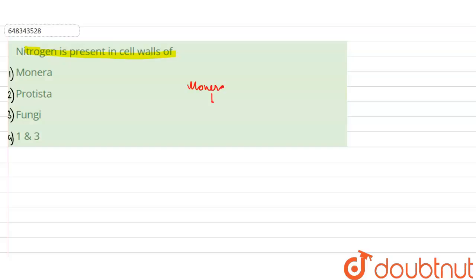So what is Monera? Monera is a kingdom. Now it includes all the unicellular prokaryotic organisms.